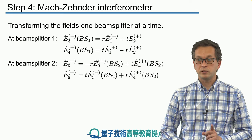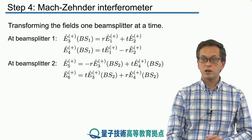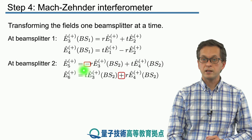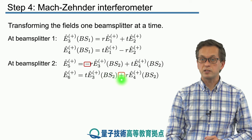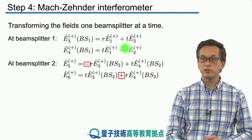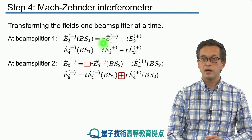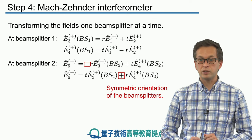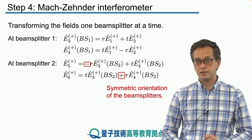At beam splitter 2, we do a similar thing, but notice now the swap in the minus signs. The minus sign is in front of this R, and there's a plus sign in front of this R. Contrast that with the case over here. And this arises from the fact that we are symmetrizing the orientation of the beam splitter, as we explained in the previous slides.